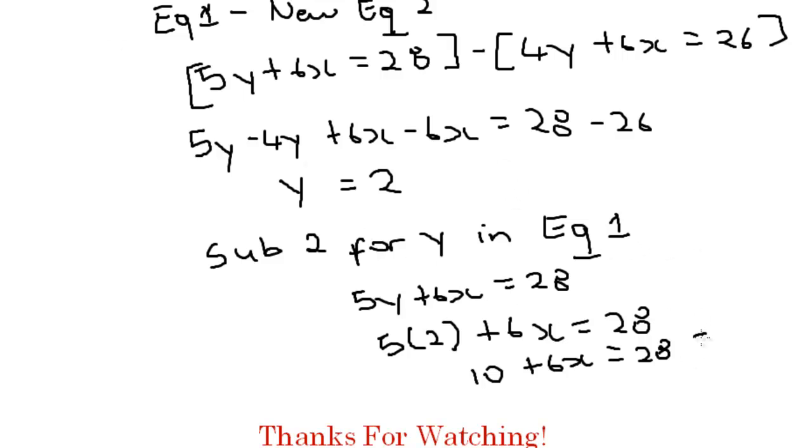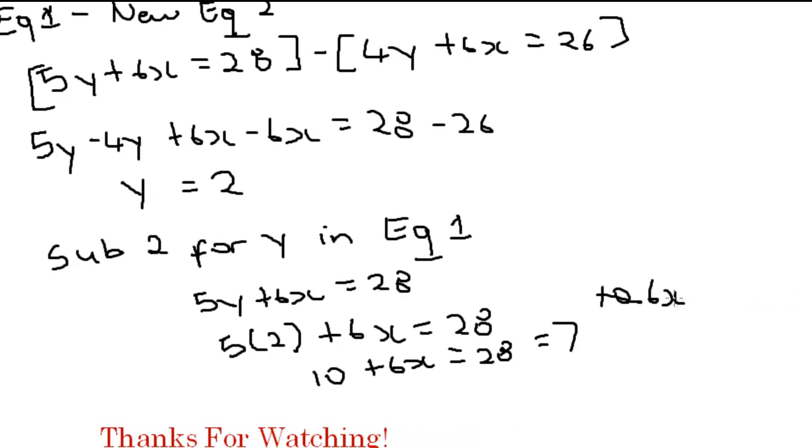That's going to be equal to 6x, and we're going to subtract 10 from both sides, so 6x equals 28 minus 10. That equals 6x equals 18. Let's divide both sides by 6. 6 into 6 will cancel, 6 into 18 is 3. X equals 3. So the solution is y equals 2, x equals 3.